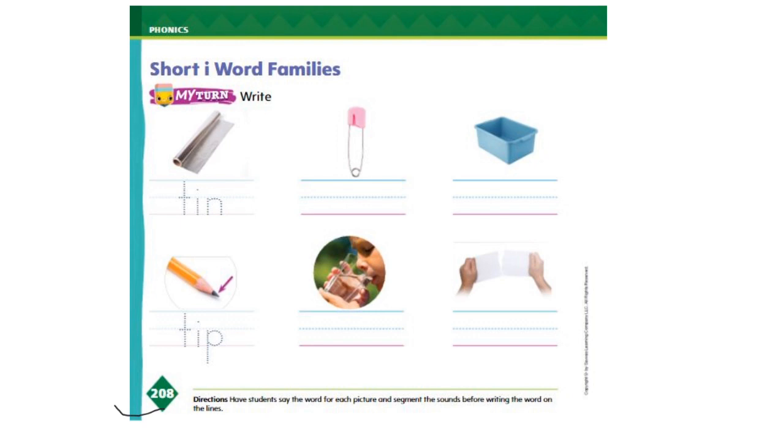Now if you open your books on page 208, Short I Word Families, we're going to look at the pictures and write the I word family under it. Look at the first one: T-I-N, tin. Now you need to write the word tin on the lines. Look at the second one: P-I-N, pin. Can you write pin on the lines? Do it for me please.